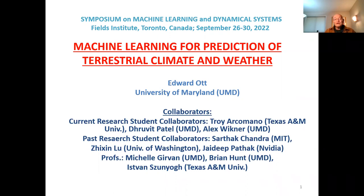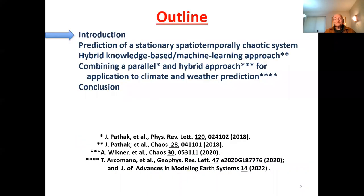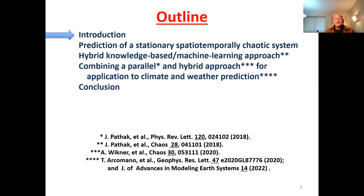I'm going to be talking about using machine learning for prediction of climate and weather. My outline starts with an introduction and a little bit of review. The first topic is prediction of a stationary spatio-temporally chaotic system — that's the character of weather and climate: spatio-temporal chaos.